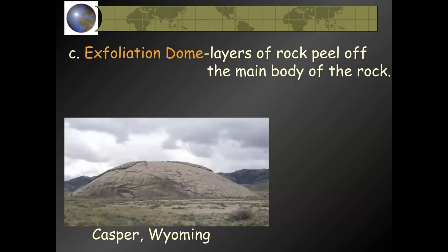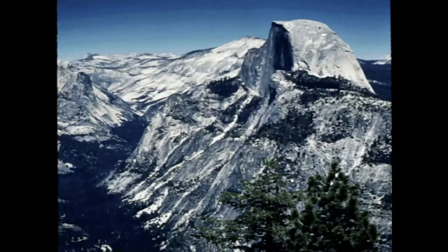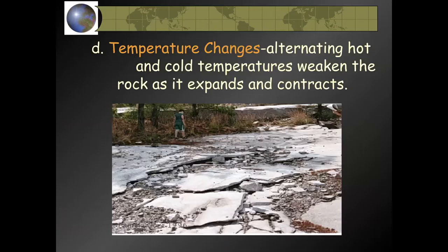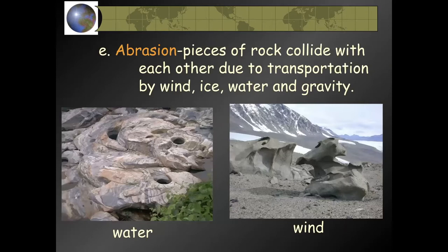Exfoliation dome: layers of rock peel off the main body of rock, as in this image from Casper, Wyoming. Temperature changes — alternating hot and cold temperatures — weaken rock as it expands and contracts. We see a lot of that in certain parts of Texas. Abrasion: pieces of rock collide with each other due to transportation by wind, ice, water, and gravity. Water and wind are the primary agents of abrasion.